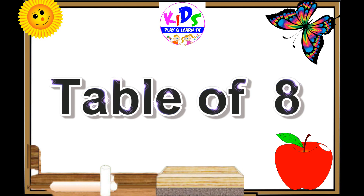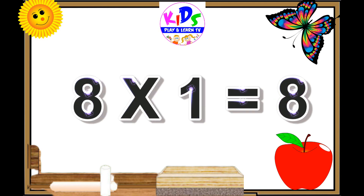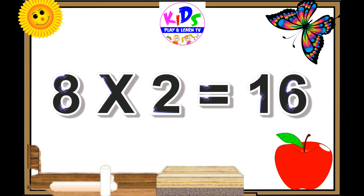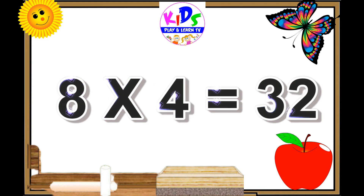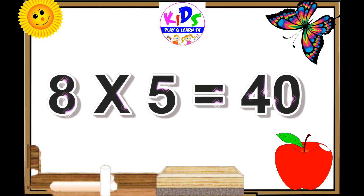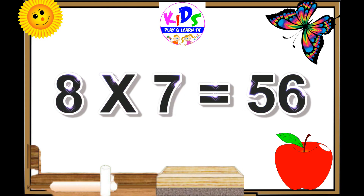Hello kids, let's learn the table of eight. Eight ones are eight, eight ones are eight. Eight twos are sixteen, eight threes are twenty-four, eight threes are twenty-four. Eight fours are thirty-two, eight fours are thirty-two. Eight fives are forty, eight sixes are forty-eight.